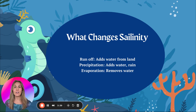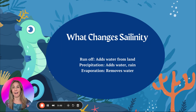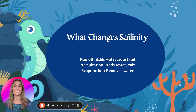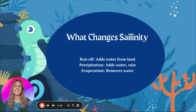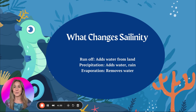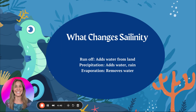What changes salinity? Runoff adds water from land — when it rains, water flows from land into the ocean, causing salinity to decrease because there's more water, like adding water to a glass of saltwater. Precipitation works the same way: adding water decreases salinity. Evaporation is the opposite — it removes water, like leaving a glass of saltwater and letting water evaporate, causing an increase in salinity because there's less water.